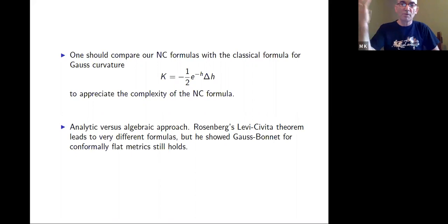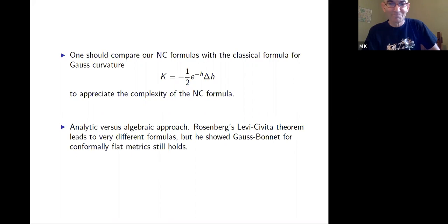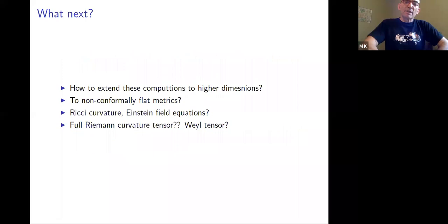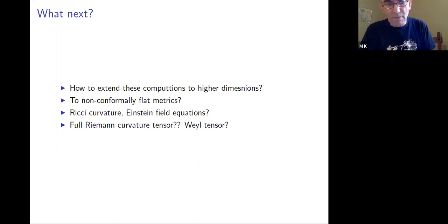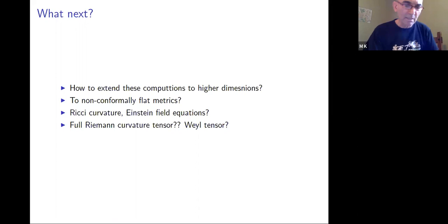So we are no better than that five-year-old girl who asked what is a curve. The real question is how to extend these computations to higher dimensions, because there is nothing in these formulas and nothing in the approach that tells us how to do that. Also: how to extend to non-conformally flat metrics? Because of the uniformization theorem in the classical case, if you take a conformally flat metric and all general conformal structures τ, you're really dealing with all metrics. But we don't have a uniformization theorem yet in the noncommutative case.